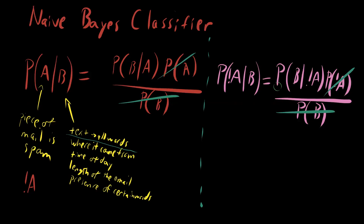For the spam example, you cannot cancel the priors, because in a thousand emails, 998 of them are going to be spam. These probabilities need to be kept so you can properly account for that. Other examples may have an equal distribution of events for A and not A, and in those cases you can cancel the priors out. But it's not a given — you have to be very careful about what the prior is telling you.